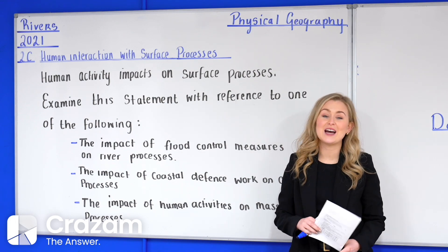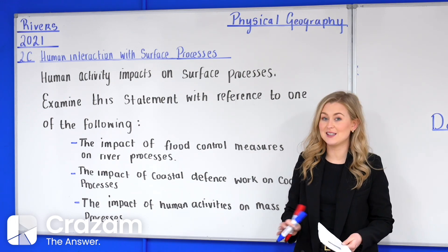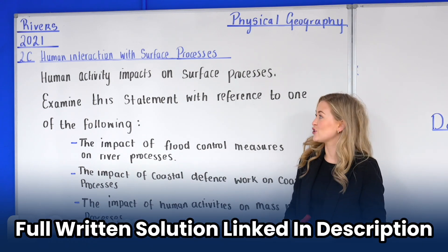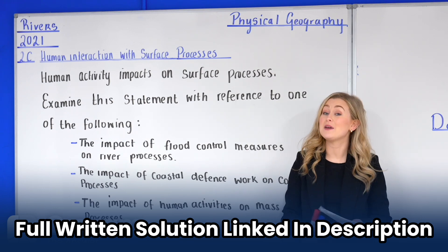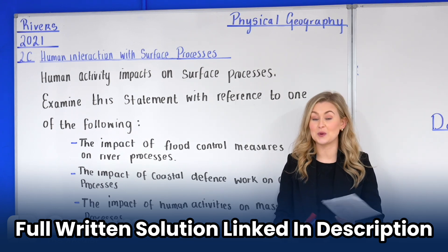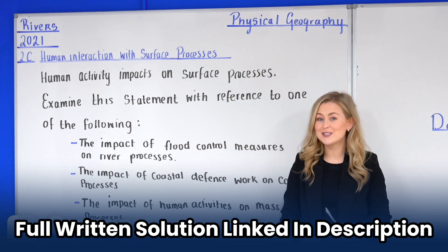Hi guys, so today we'll be taking a look at 2021's question 2C based on Rivers. Now this here is a physical geography question which means it can appear as question number 1, 2 or 3, B or C. So let's take a look.